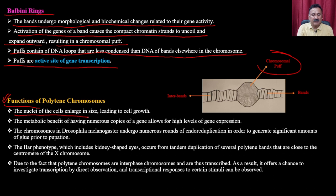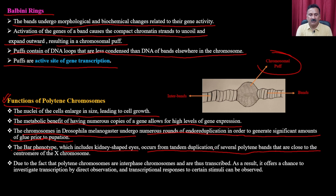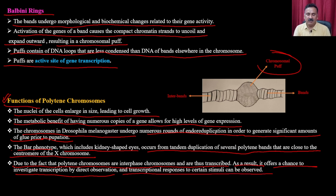The function of polytene chromosomes includes enlarging the cell nucleus for cell growth and providing metabolic benefit through numerous gene copies allowing higher gene expression. In Drosophila, polyteneization generates significant amounts of glue prior to pupation. The bar phenotype (kidney-shaped eyes) results from tandem duplication of polytene bands near the centromere of the X chromosome. Because polytene chromosomes are interphase chromosomes, they are actively transcribed, allowing direct observation of transcriptional responses to stimuli.